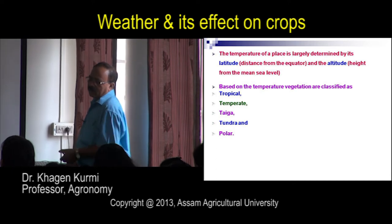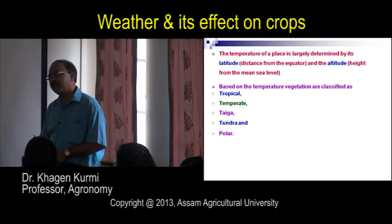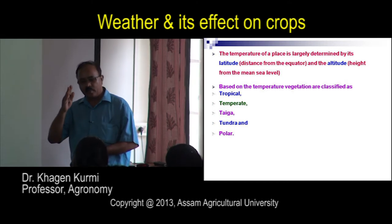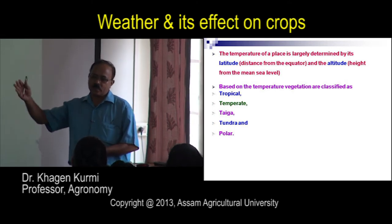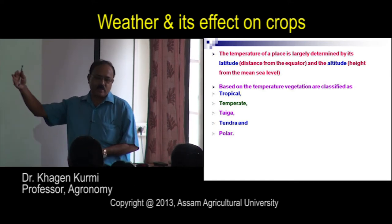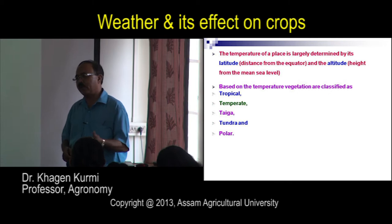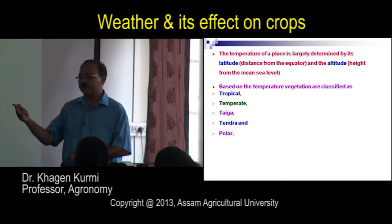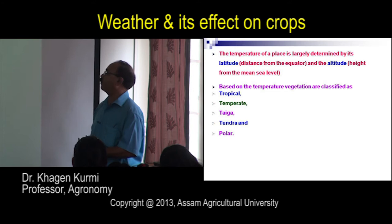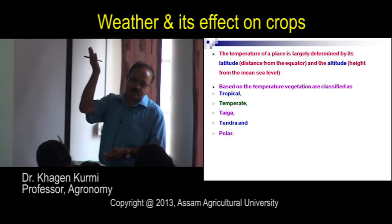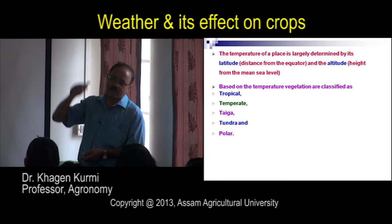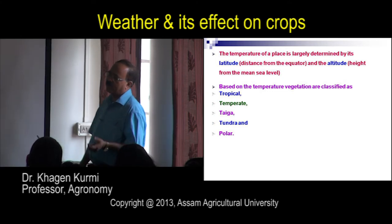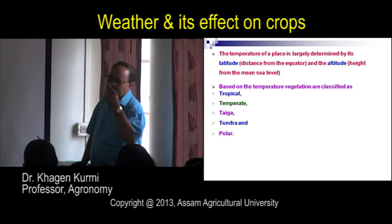Temperature on the earth varies in two ways: horizontally and vertically. Horizontally, as you move away from the equator towards the polar region, you get lower and lower temperatures — giving tropical, subtropical, temperate, subtemperate, and polar climates. Vertically, as you go up from mean sea level, temperature decreases. In the same latitude, a higher altitude gives lower temperature; for example, Shillong and Kohima have less temperature than the plains.